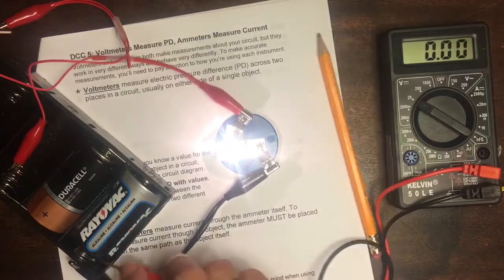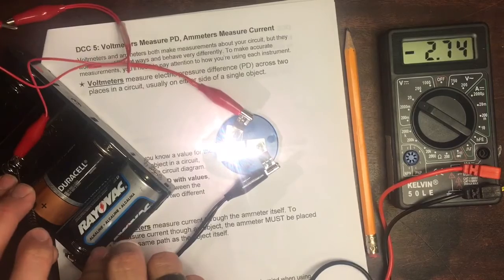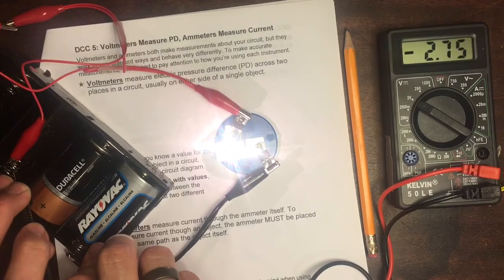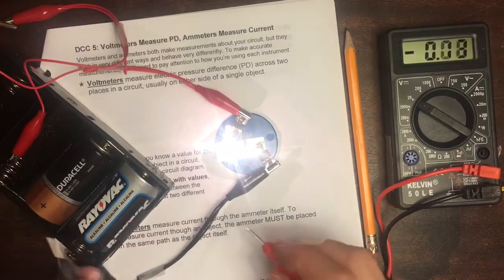If we do the same thing across a battery, we'll get a pressure difference of 2.75 volts. So they're not exactly the same, but they're close.